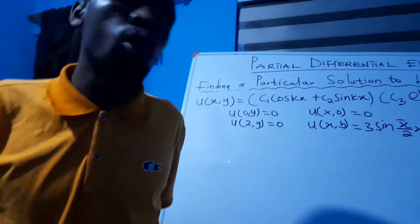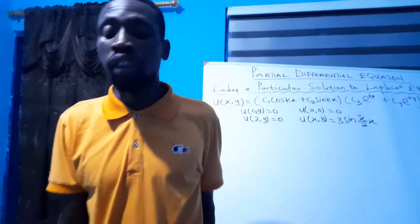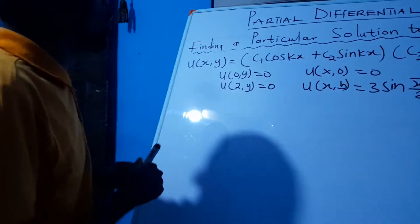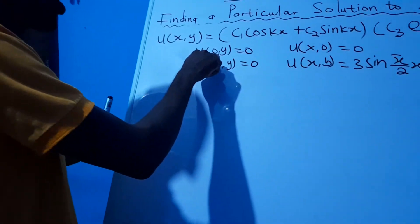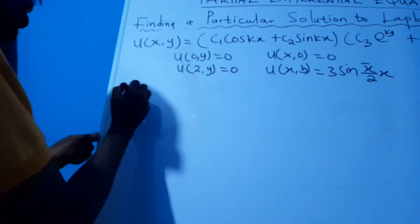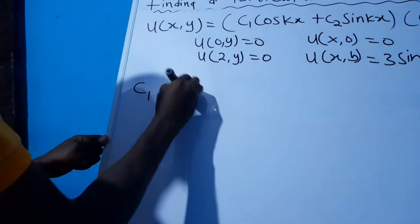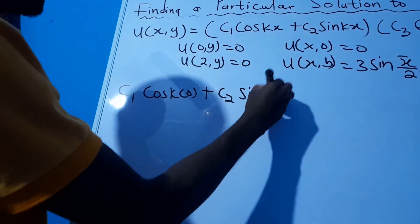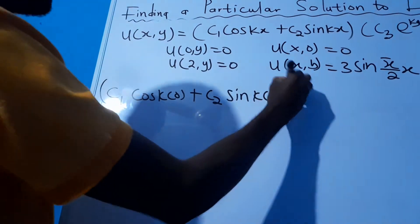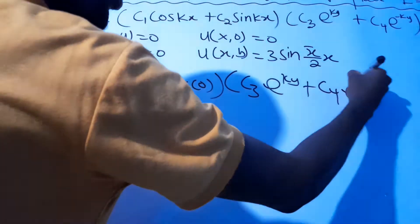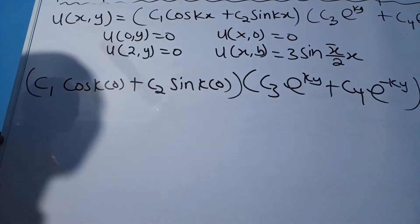We've identified the general equation we'll use to find the particular solution. We're going to substitute our boundary conditions. Let's substitute the first one: u(0,y) = 0. So anywhere we see x in this equation we substitute zero, giving us: c1·cos(k·0) + c2·sin(k·0), times c3·e^(ky) + c4·e^(-ky), equal to zero.